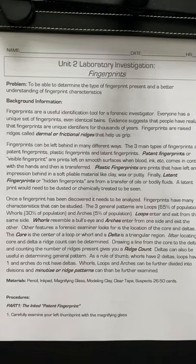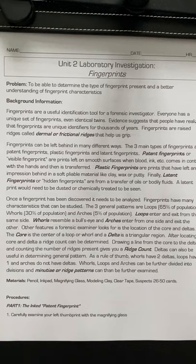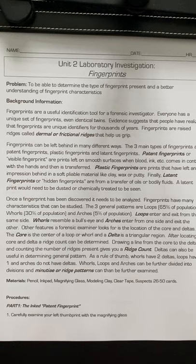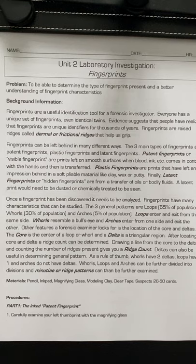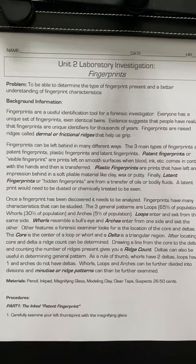Welcome everyone. Today we're going to take a look at our lab for an investigation on fingerprints. Ideally you've gone through the three parts I've made for this unit and have a decent idea of the history of fingerprints, how they form, why we have them, the three main pattern types — the loop, the whirl, the arch — and the types of fingerprints that can be left behind. This works out to be a pretty cohesive review of the entire unit.